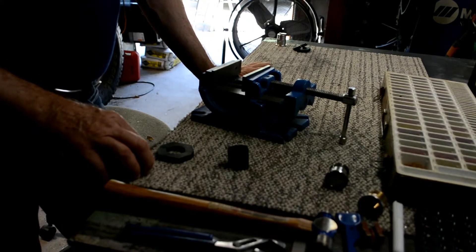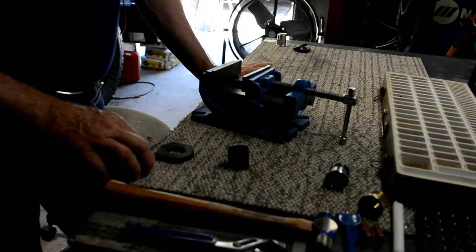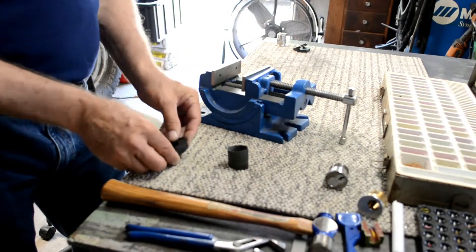This is a mortise cylinder die. It's for re-threading and restoring threads on a mortise cylinder lock.